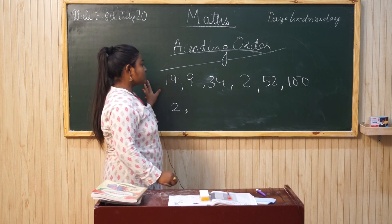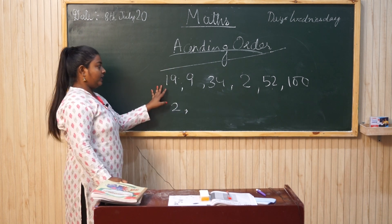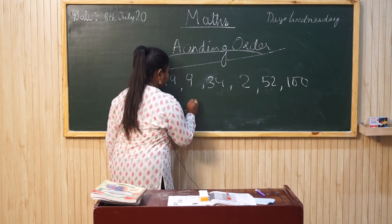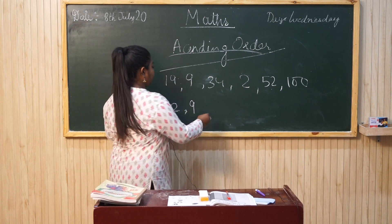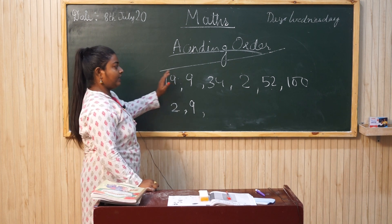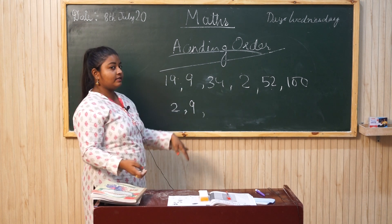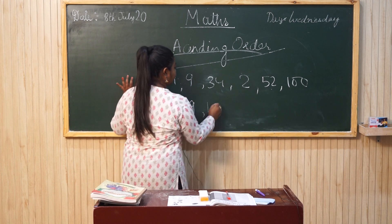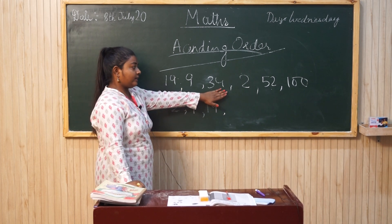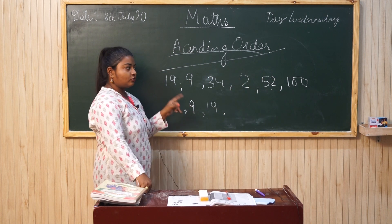Then the next number — after 2, which is the greater number? Is it 19? No. Is it 9? Yes, it's 9. Because after 2 comes 9. Then you will take another, which is 19. Or we will take 34. But 34 comes after 19. So you will write 19 here. Now next, you will take 34 or 52. So 52 is greater, but 34 is smaller, so first 34 will come.